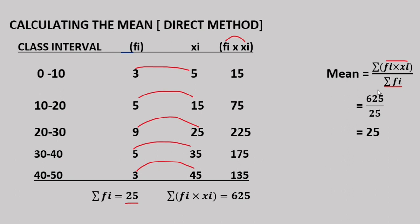Now, summation of fi into xi: 15 plus 75 plus 225 plus 175 plus 135. The summation of fi into xi equals 625.